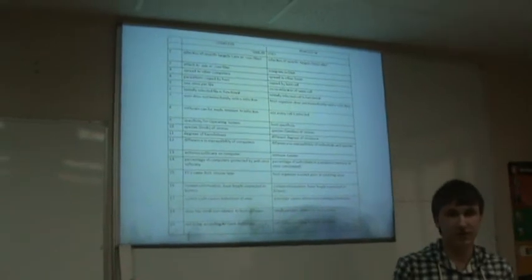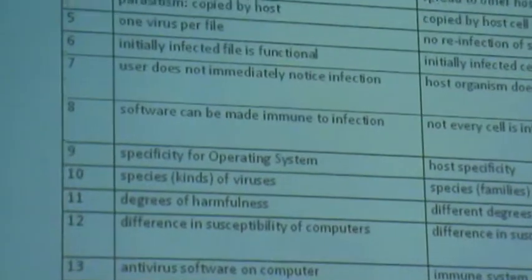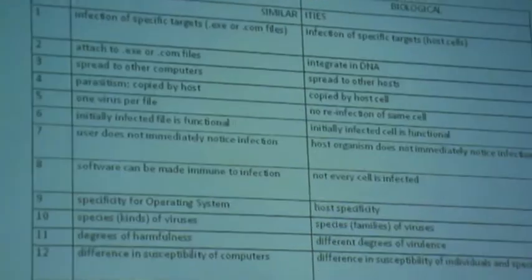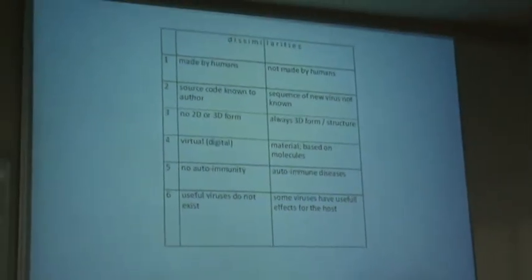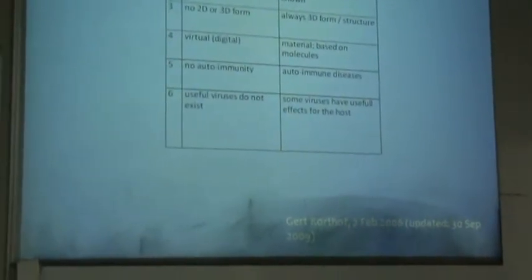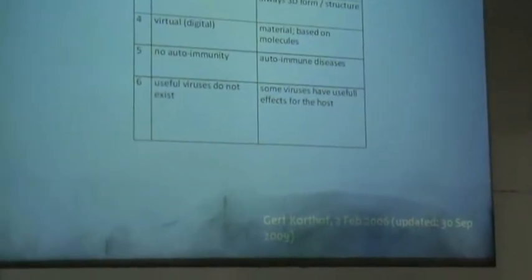Here you can see a table that collects all of the similarities and differences I found during this work — there are similarities, potential similarities, and differences. This table was originally made by Gerhard Kortov in 2006, and I've attempted to update it, since it had not been revised for quite some time.